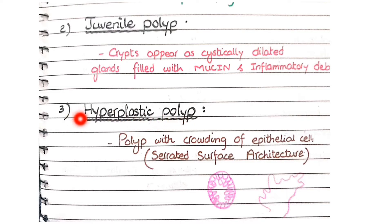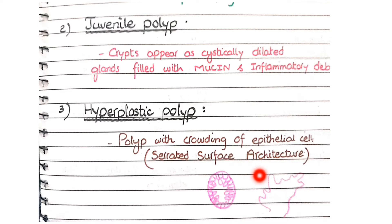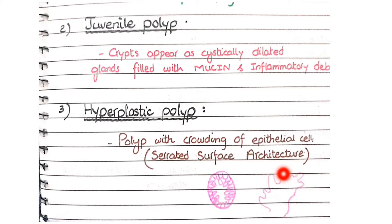The third type is hyperplastic polyps. As the term hyperplastic implies, these polyps are composed of crowding of epithelial cells. Hyperplastic polyps have a serrated surface architecture, meaning the surface of the epithelium has a saw-tooth appearance, which develops due to the crowding of epithelial cells.